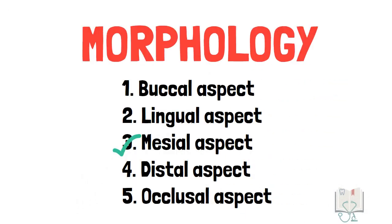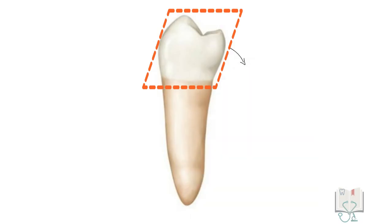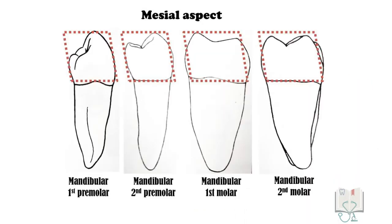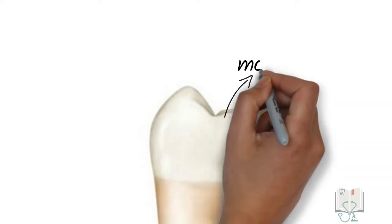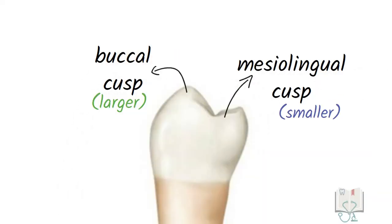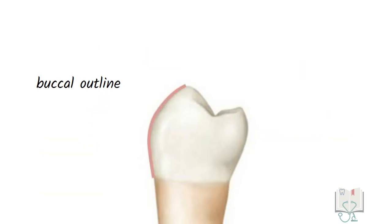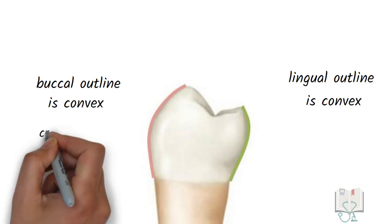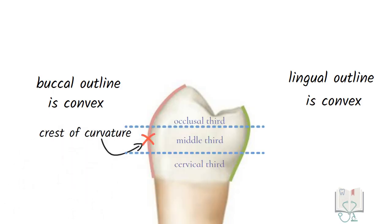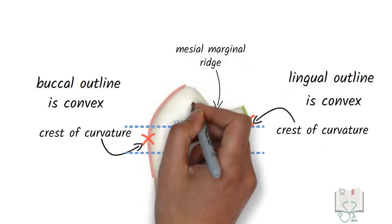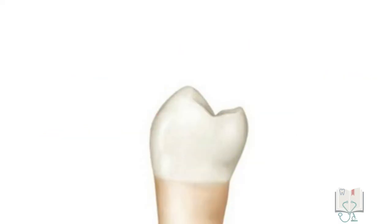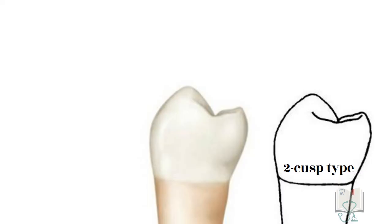Next, the mesial aspect. The outline form is rhomboidal in shape, which is the same in all mandibular posterior teeth. Two cusps are seen from this aspect: the smaller mesolingual cusp and the larger buccal cusp. The tip of the mesolingual cusp lies outside the confines of the root, just like in the first premolar. Both buccal and lingual outlines are convex. The crest of curvature of the buccal outline is at the middle third, and the crest of curvature of the lingual outline is at the occlusal third. The mesial marginal ridge runs horizontally between the two cusps. The two-cusp type appears exactly the same from the mesial aspect.